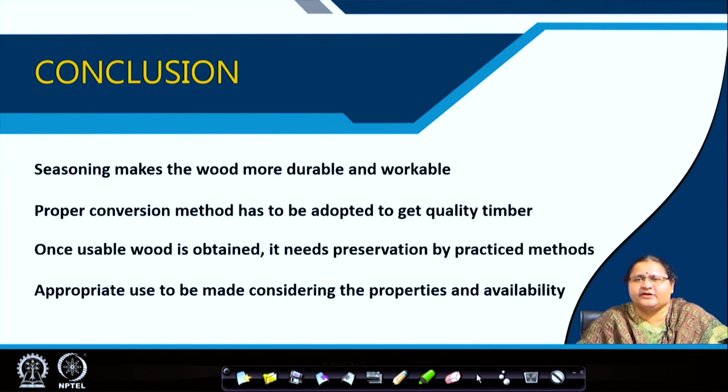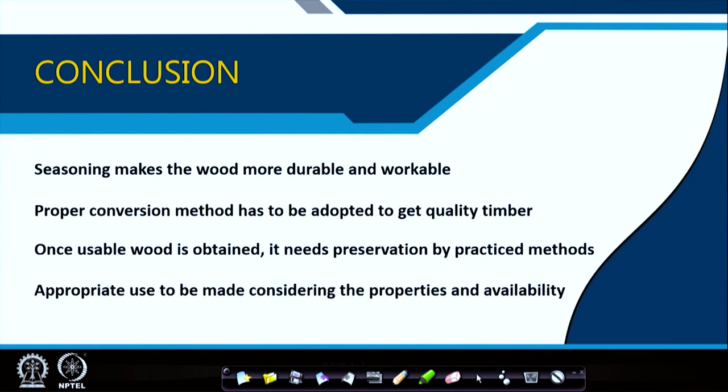Once usable wood is obtained, it needs preservation by established methods, and appropriate use must be made considering its properties and availability. Availability and the conversion method both affect cost. Wood is purchased in cubic metres or cubic feet, and converting it to necessary items requires the workmanship we call carpentry. The next lecture will mostly cover wood joinery, with a brief on defects one may encounter while obtaining timber and how to rectify them. Today's lecture ends here.